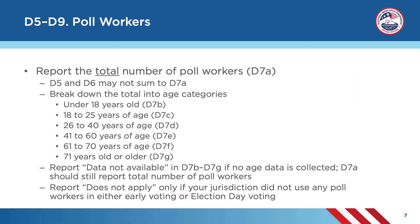Next, question D7 asks about the age of your jurisdiction's poll workers. In D7a, you will report the total number of poll workers who assisted with the 2022 general election. Please note that the numbers you recorded in D5 and D6 may not sum to what you report in D7a because some poll workers could have been counted in both D5 and D6. After reporting the total number of poll workers, you will provide the number of poll workers who fell into each of the listed age categories in D7b through D7g. Some jurisdictions have that information from poll workers' applications or from payroll records. However, if your jurisdiction doesn't collect that data, you can report 'data not available' for D7b through D7g while still providing the total number of poll workers in D7a.